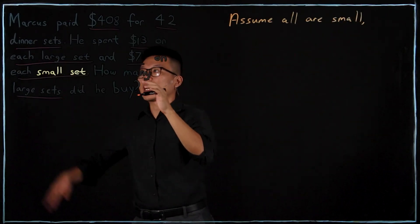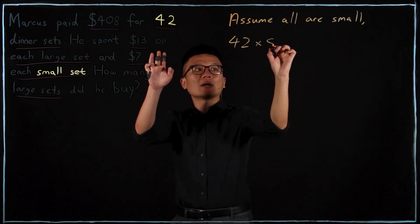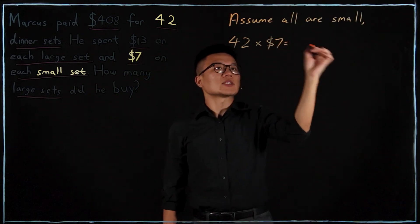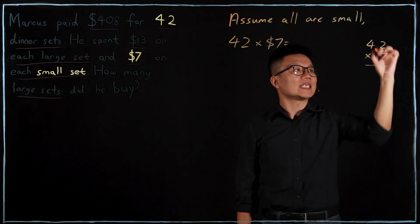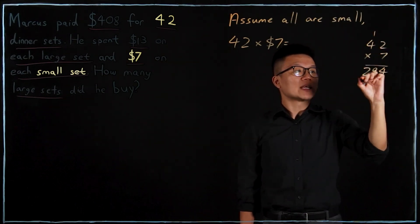And then I will find 42 small sets. I multiply by $7. I'll work it out: 42 times 7. 2 times 7 is 14, 4 times 7 is 28 plus 1 is 29. So $294.